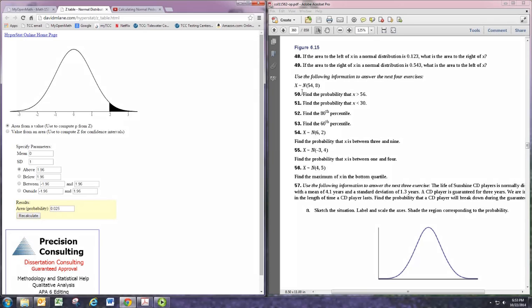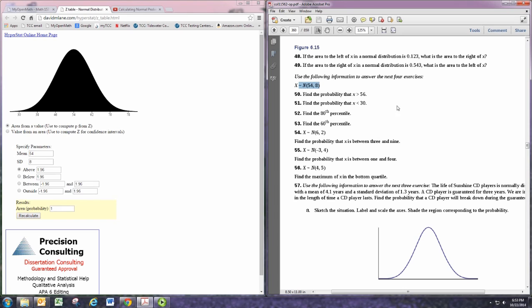In this problem, we have the mean is 54, and the standard deviation is 8. I'm going to find the probability that x is greater than 56. That would be above 56.